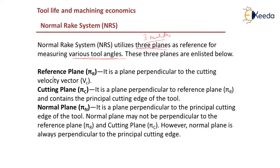The three planes required in NRS are: first, the reference plane Pi_r, which is the plane perpendicular to the cutting velocity vector — same as in ORS. Second, the cutting plane Pi_c, which is the plane perpendicular to the reference plane and contains the principal cutting edge of the tool — also same as in ORS. In ORS we used the orthogonal plane, but in NRS we use the normal plane instead.